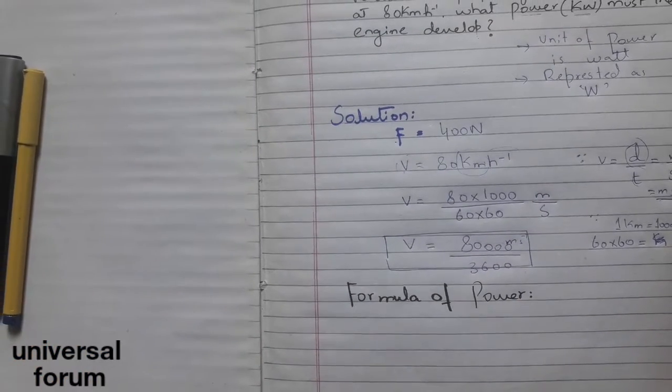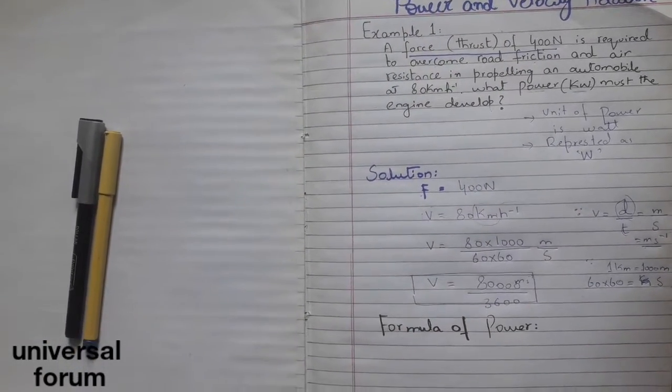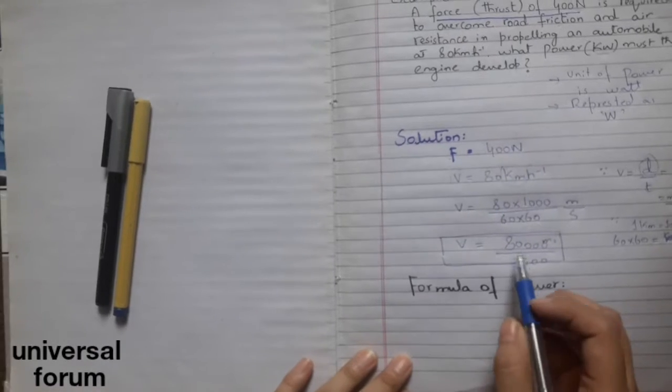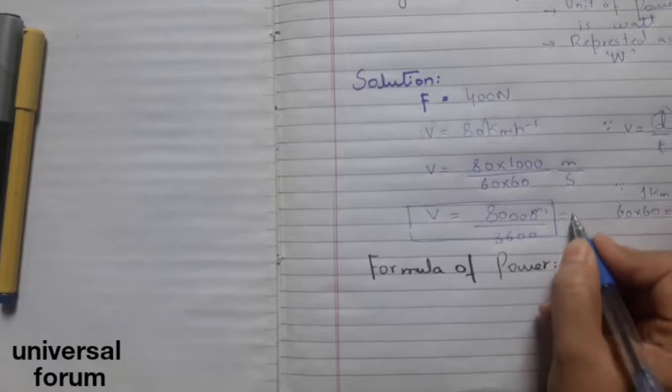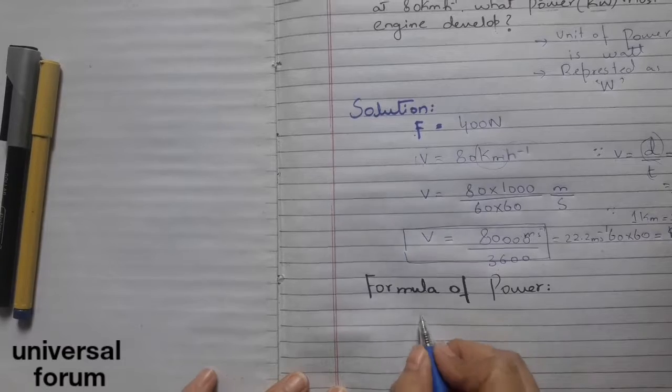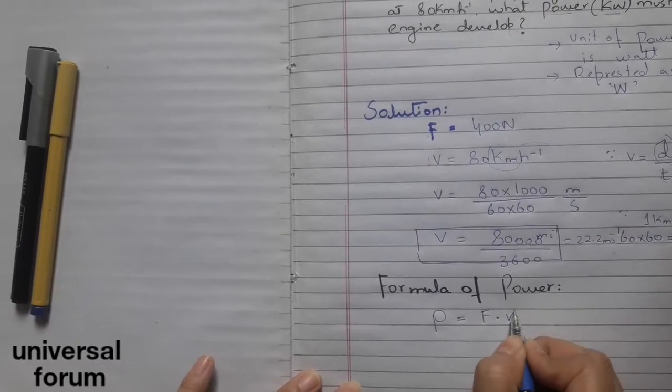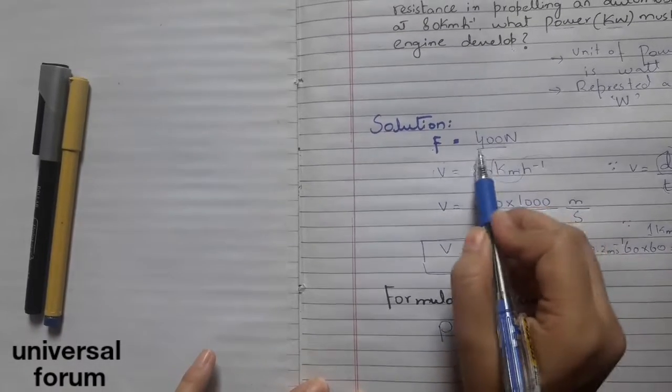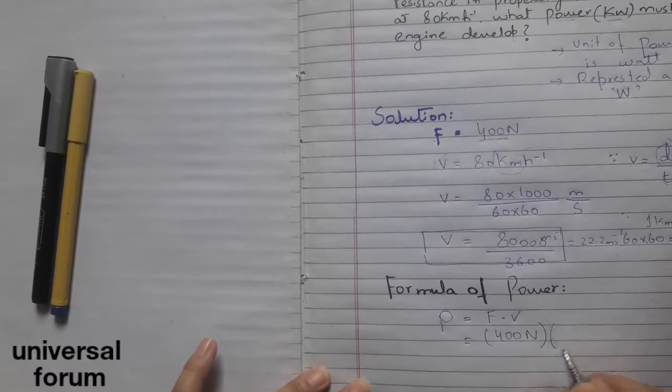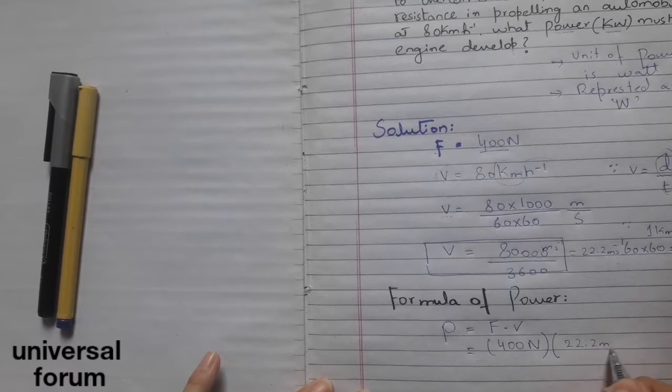If you want to go through the whole relation about power and velocity, you must review my previous video. If we divide 80,000 by 3,600 we get 22.2 meters per second. As we know the formula of power is P equals F dot V. F is 400 Newtons and velocity is 22.2 meters per second.